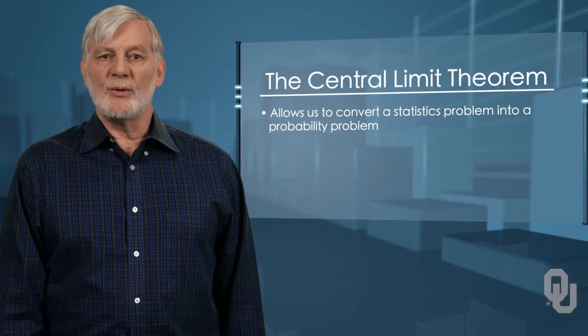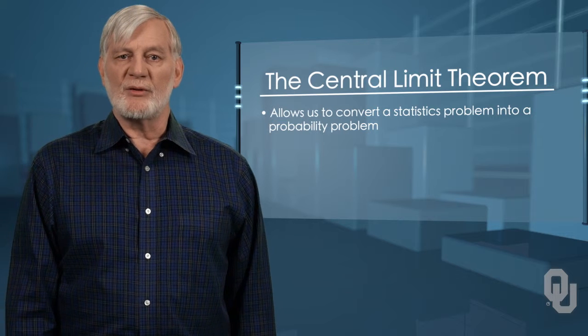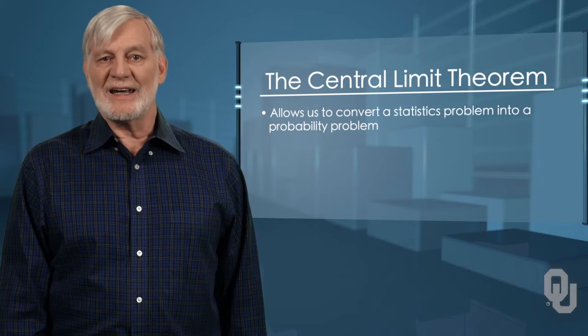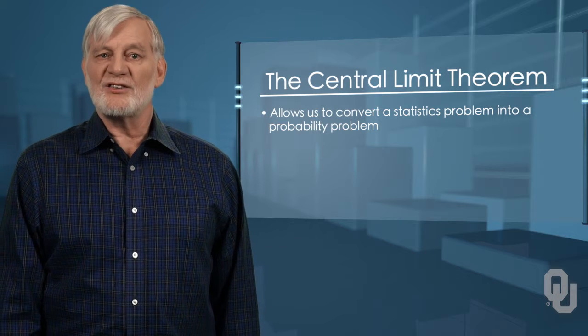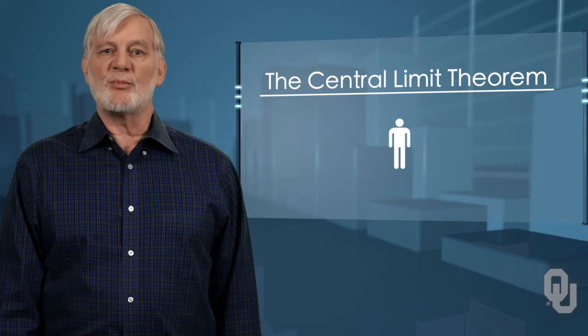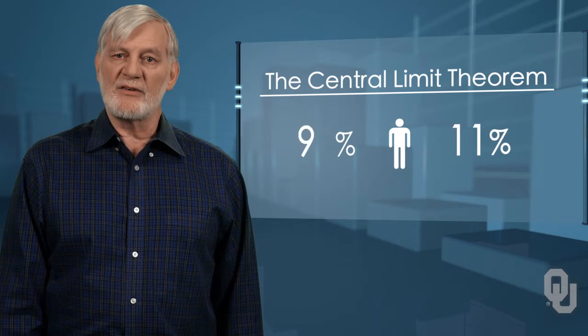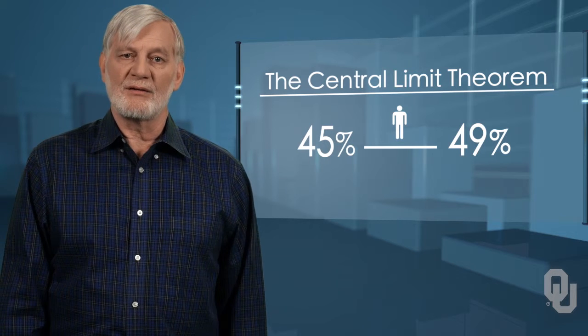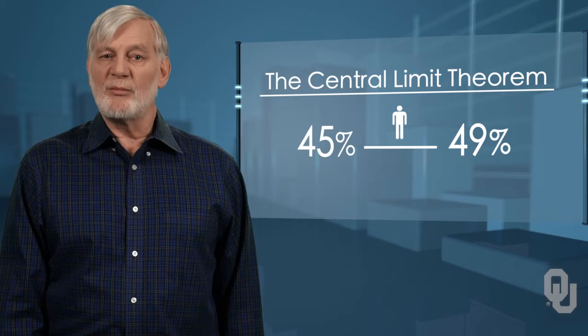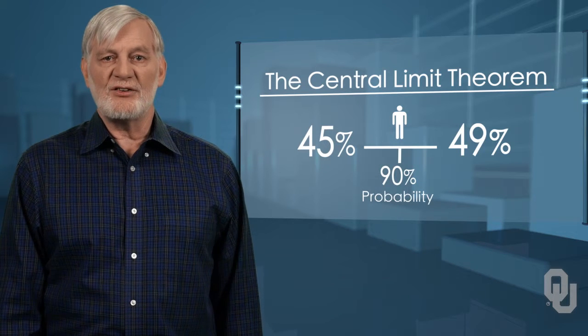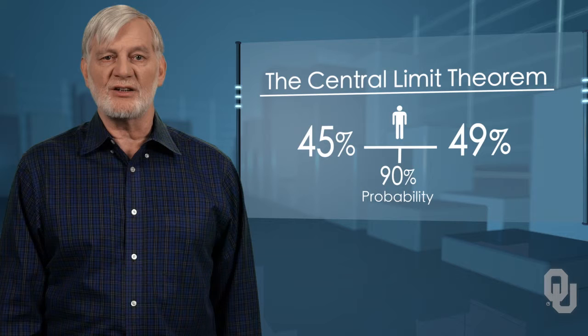In a later unit, we will use this theorem to move us from the darkness of statistics to the bright world of probability, where we can calculate an estimate, where we can assign a probability to an estimate, where we may say, I estimate that the proportion of people who will vote in favor of the bond issue lies between 45% and 49%. Our estimate will have a probability attached, say 90% sure, rather than be simple, raw speculation, with no foundation for measuring its accuracy.